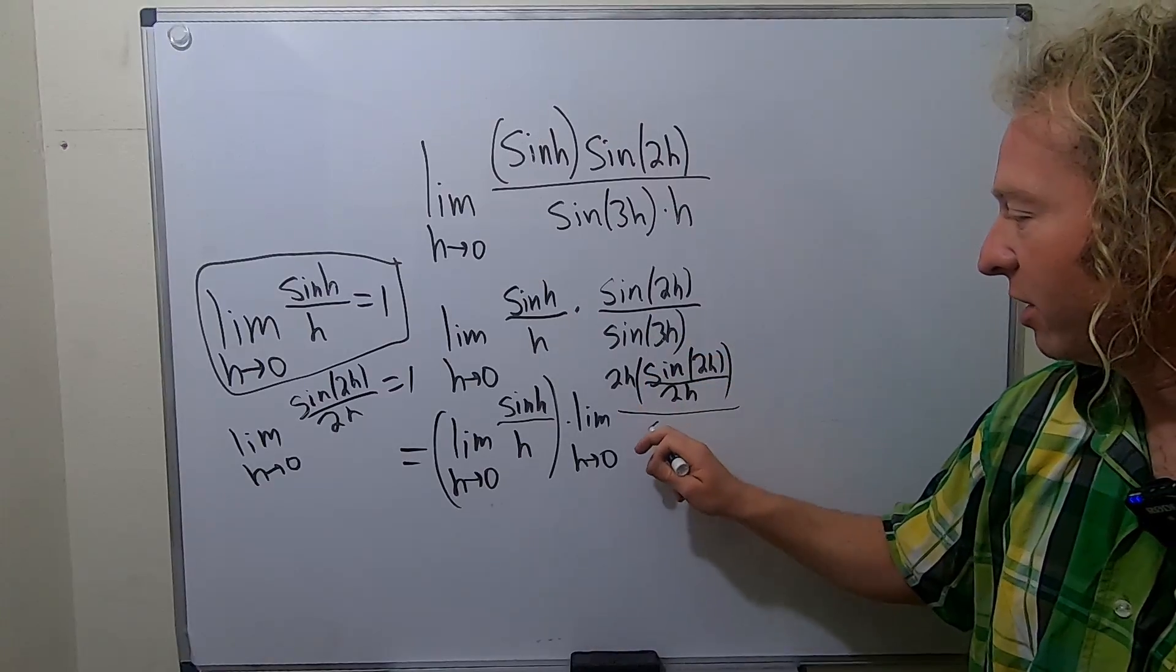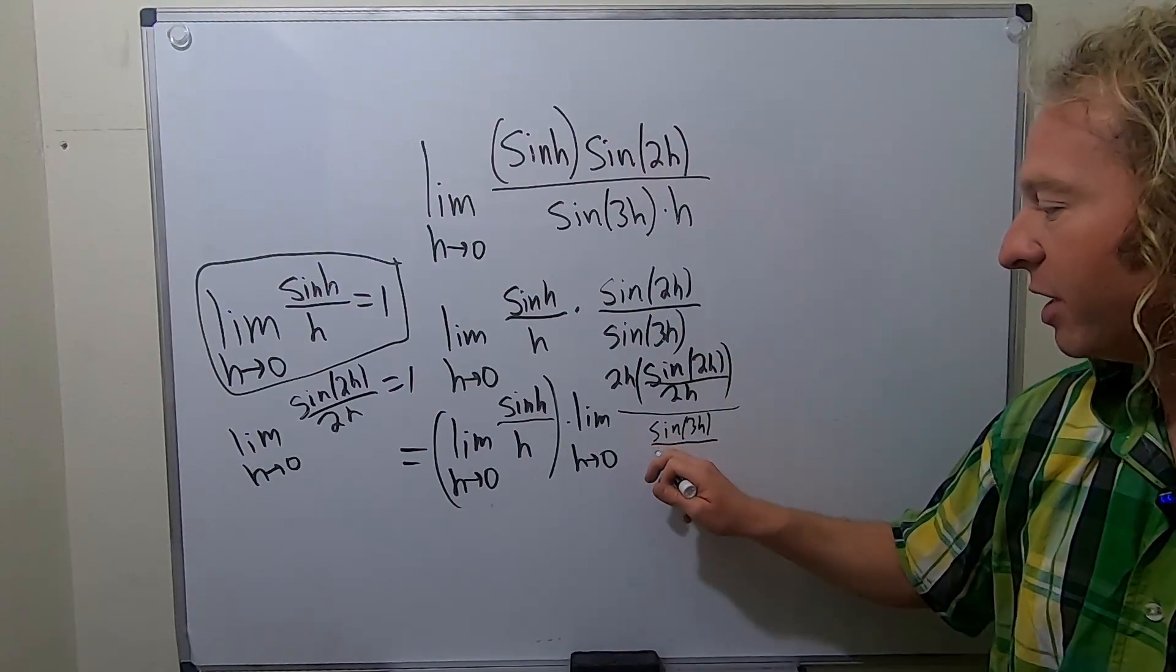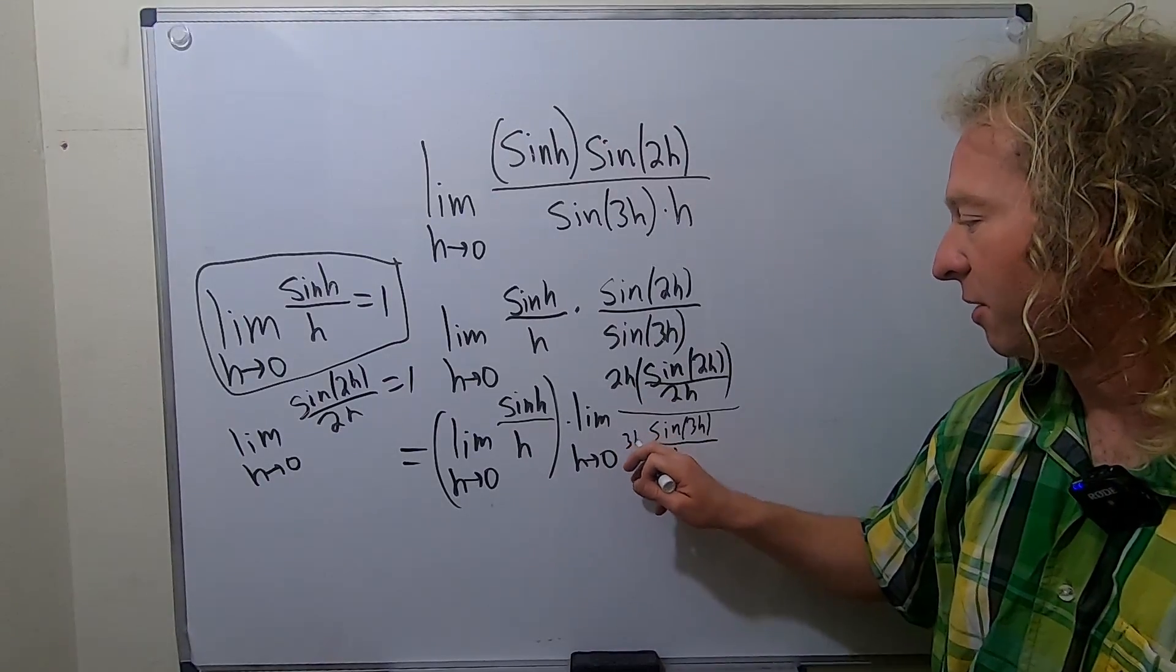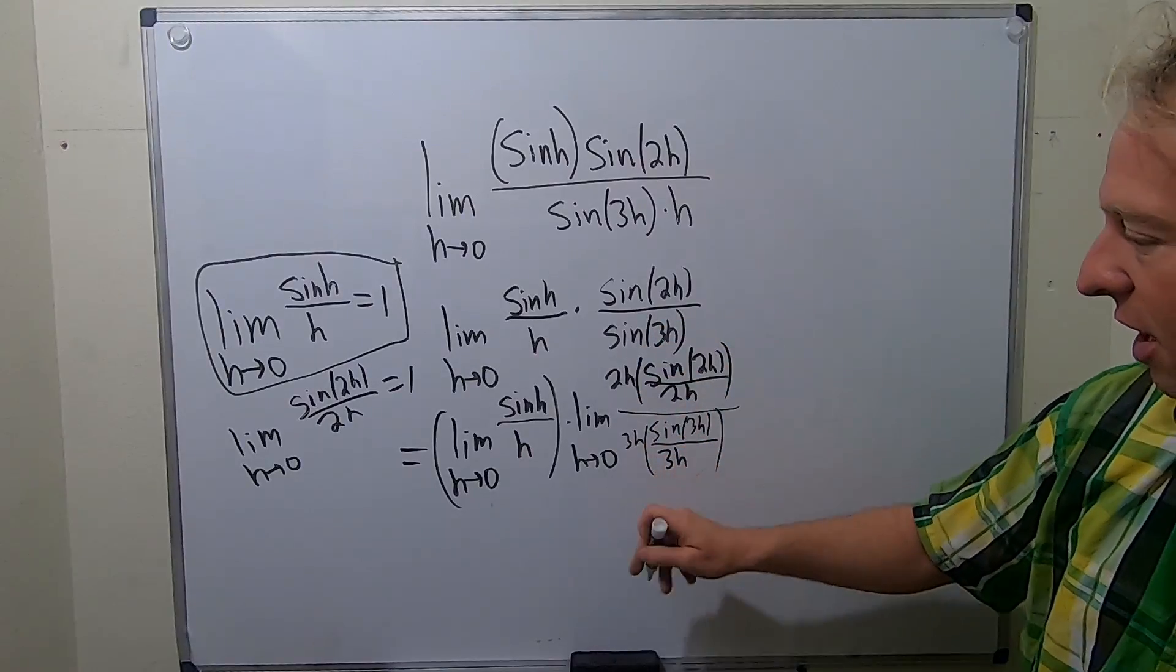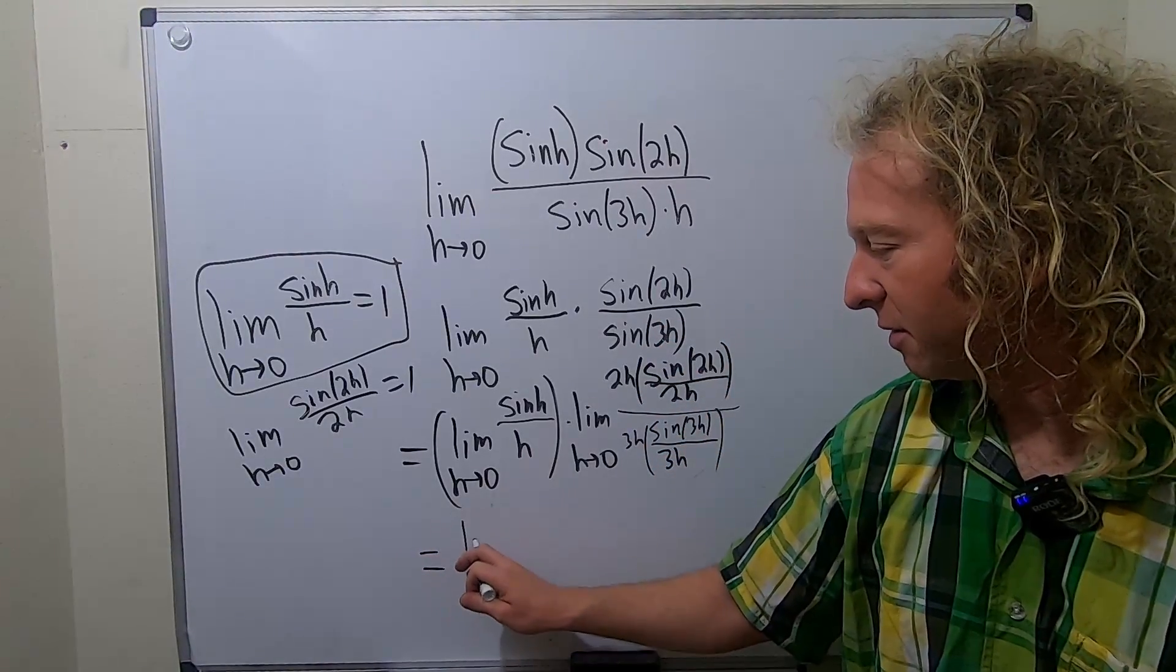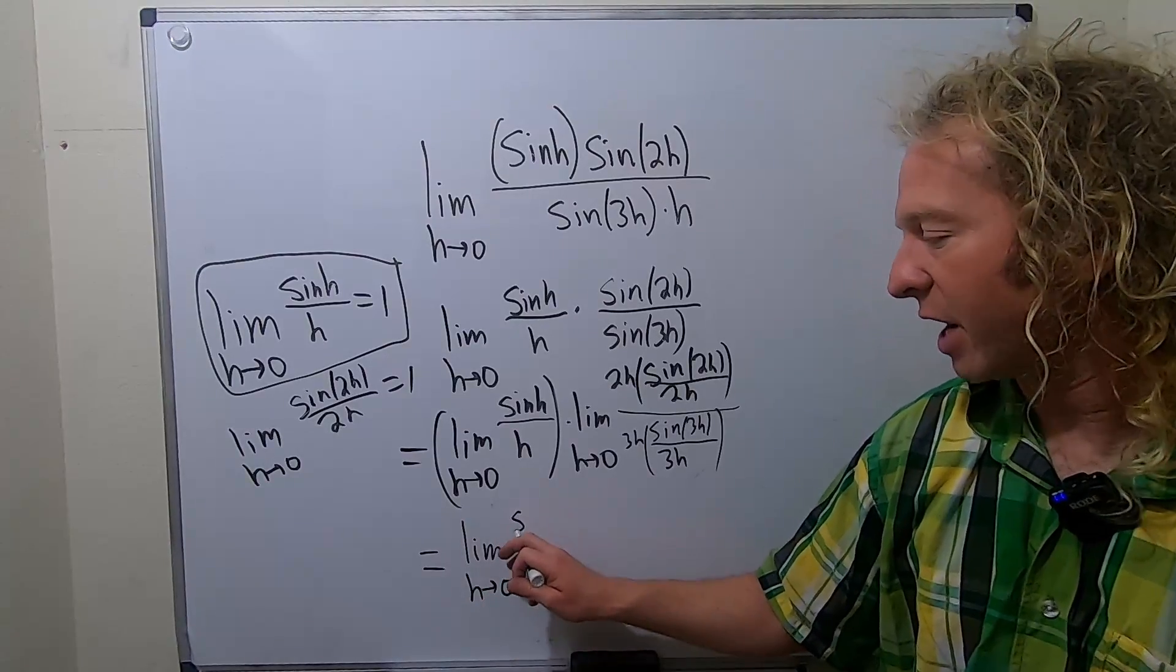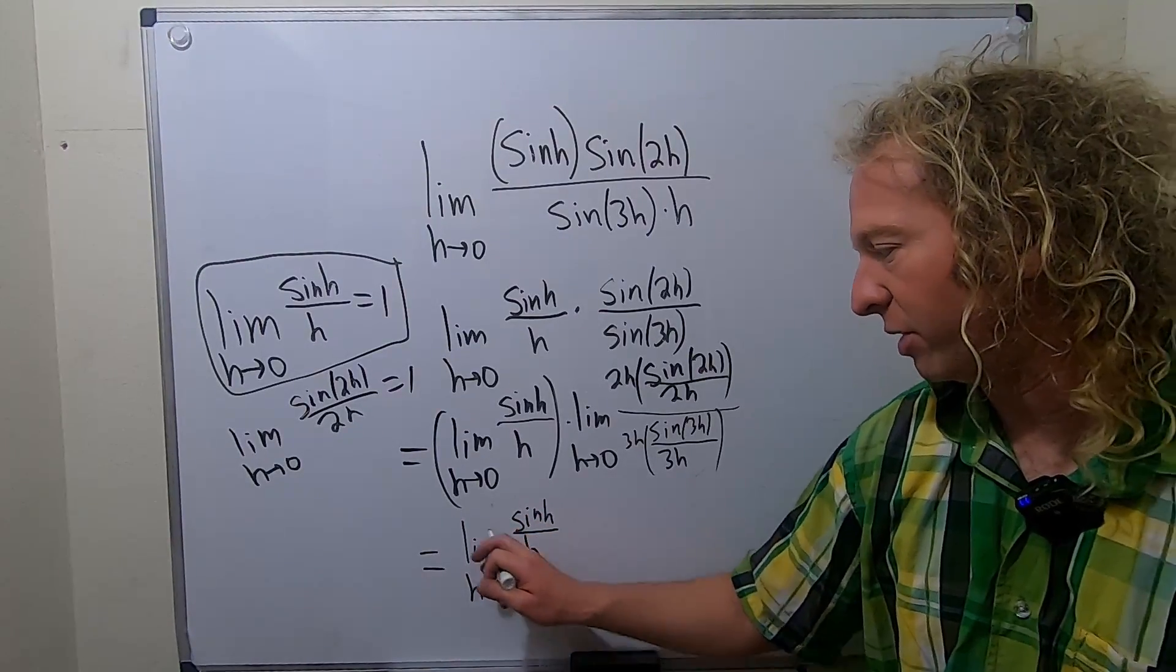Same thing here. We have sine 3h. And then we'll put a 3h here. And then we'll eliminate it by putting a 3h here. It's really small. I hope you can see it. So those will cancel as well. So we've done nothing here. I'm going to write this one more time. This is the limit as h approaches 0 of sine h over h. Really pretty stuff.